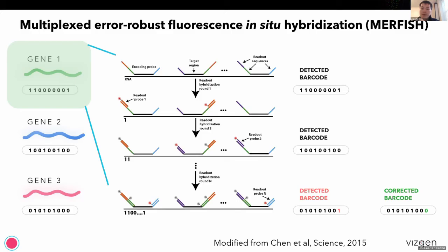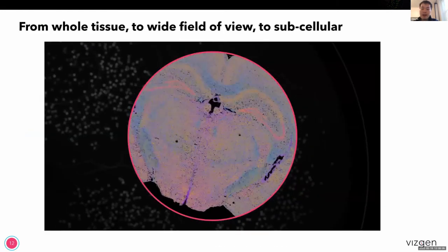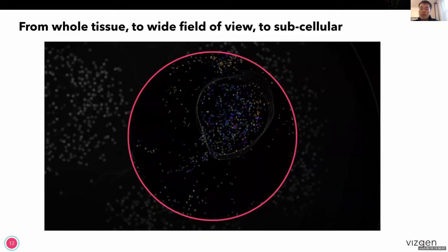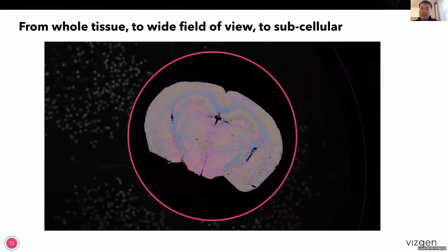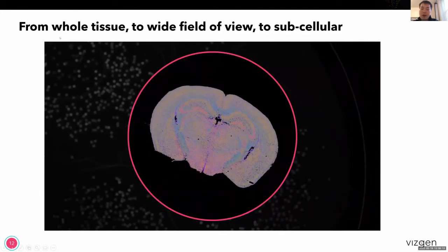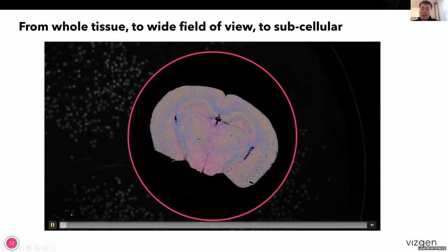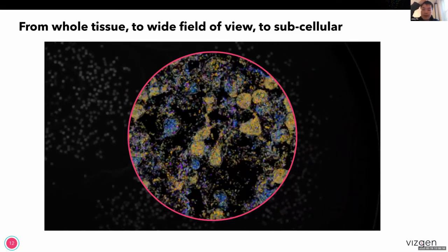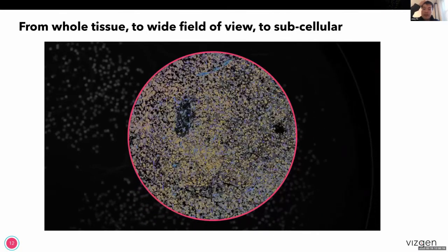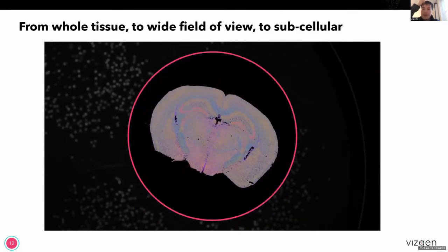With the ability to label and resolve many different RNA species at the same time, this essentially allows researchers to zoom in to different tissues and visualize gene expression in situ, from across the whole tissue to single-cell level down to subcellular resolution. The different colored dots indicate different RNA species imaged in a mouse brain sample.